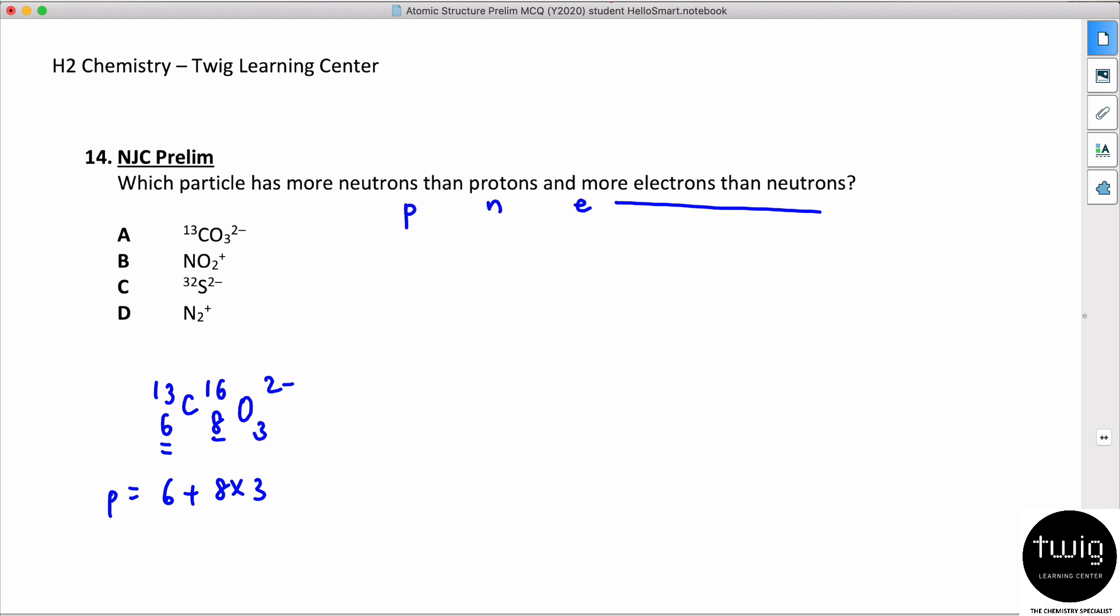I'm gonna write down first this is 30. In terms of the neutrons, it has 7 neutrons for carbon, right? 13 minus 6 is 7. So 7 neutrons over here and each oxygen also has 8 neutrons, so 8 times 3. This is 31. Since it's 2 minus, there must be 32 electrons compared to 30 protons, right?